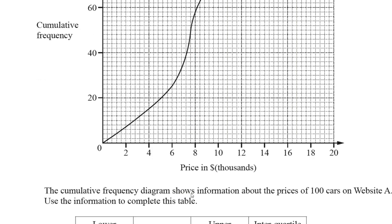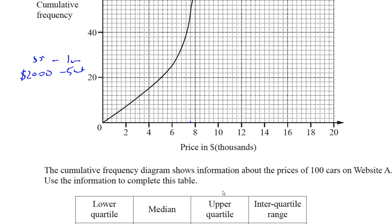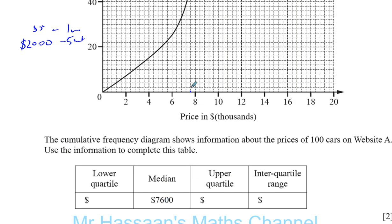Reading from the graph, the median is about seven thousand six hundred. They tell us this, but it also helps us confirm the scale. From the axis, six to eight represents two thousand pounds, contained within five units — so each unit represents 400. That means the values go six thousand four hundred, six thousand eight hundred, seven thousand two hundred, seven thousand six hundred, eight thousand. So that confirms the median of seven thousand six hundred and what each square represents.